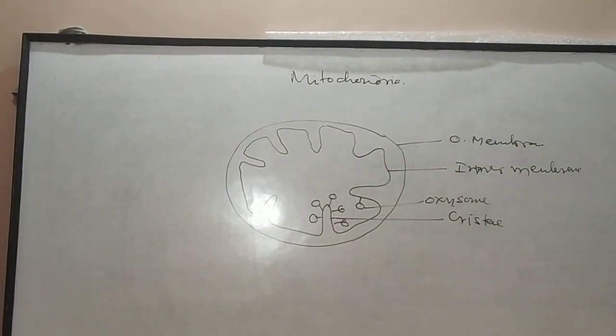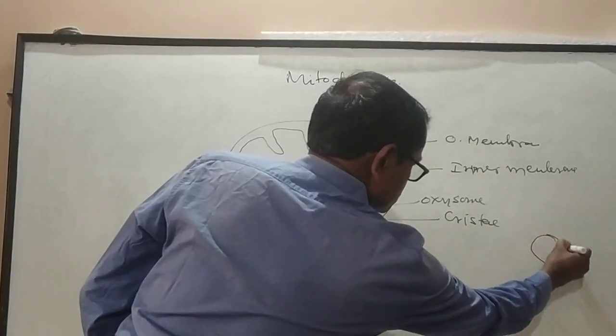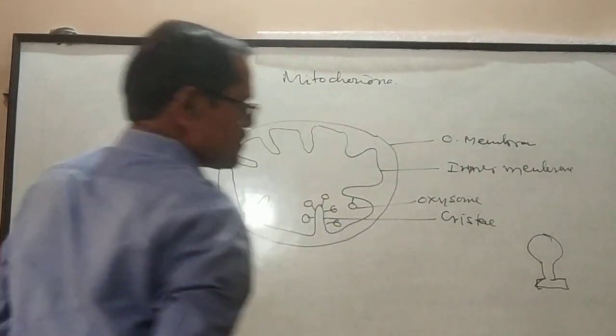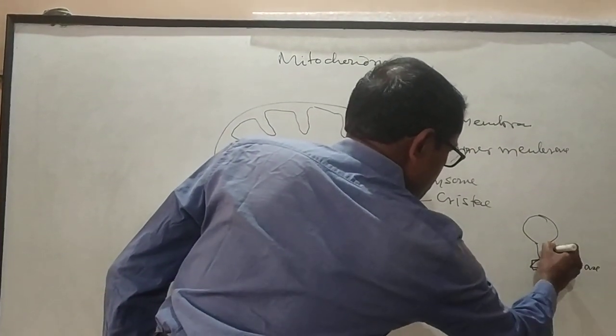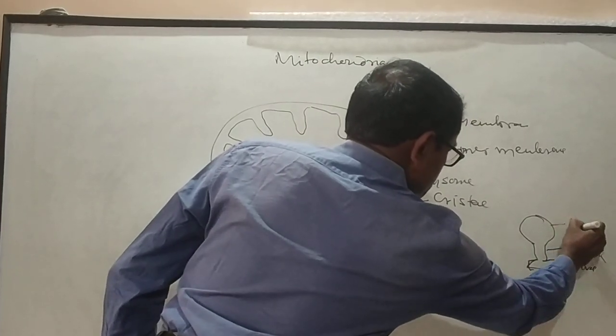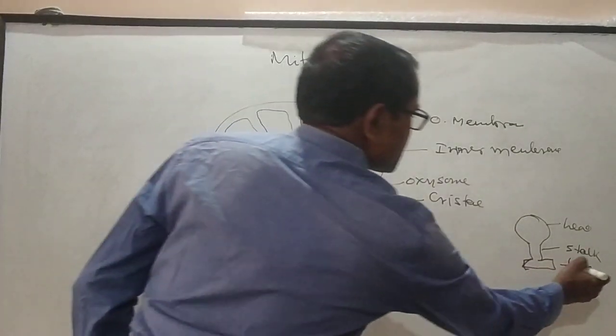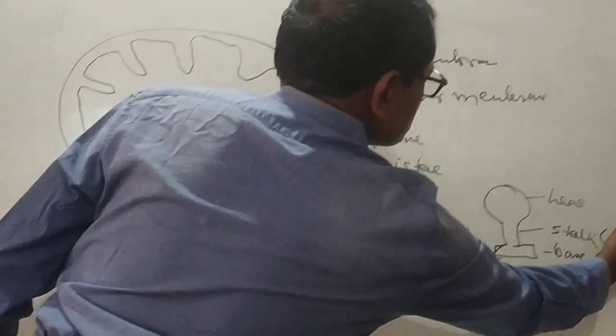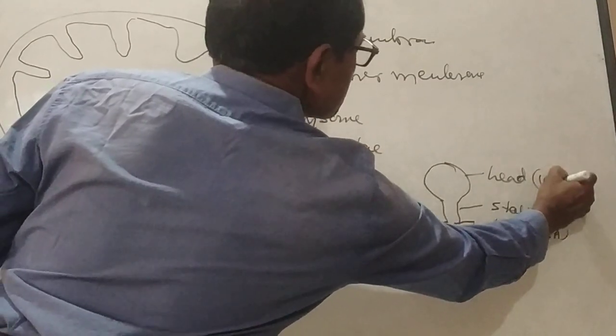A single particle has its three parts. That is base, that is stalk and this is head zone. The base is 10 angstrom, stalk is 50 angstrom and head is 100 angstrom.